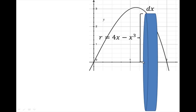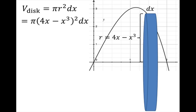My radius is just the function value. We're going from zero up to 4x minus x cubed. So the volume of a disk is going to be pi times my radius squared times the thickness, which is dx, plug all that in, and we get 4x minus x cubed, we're going to square that.